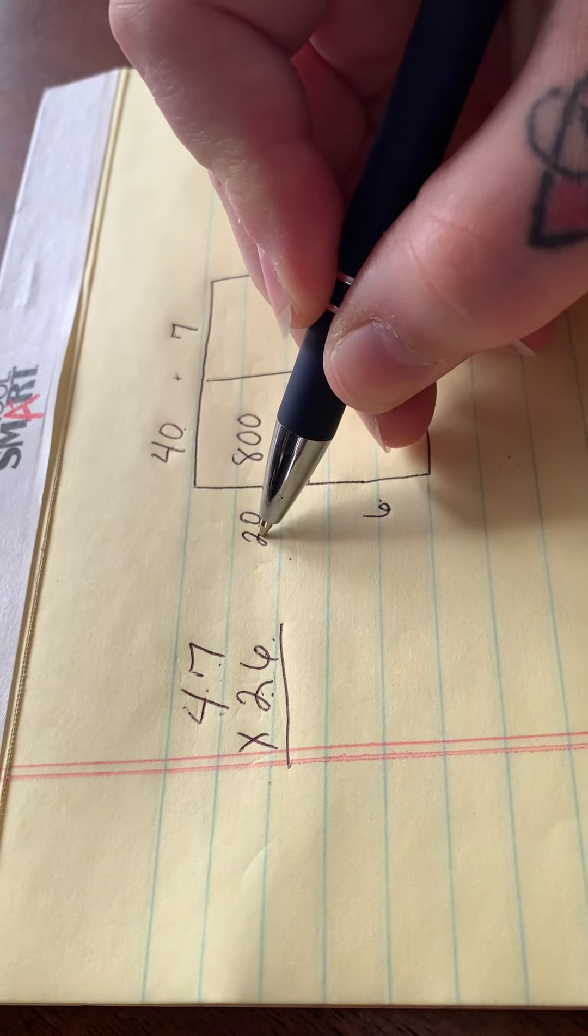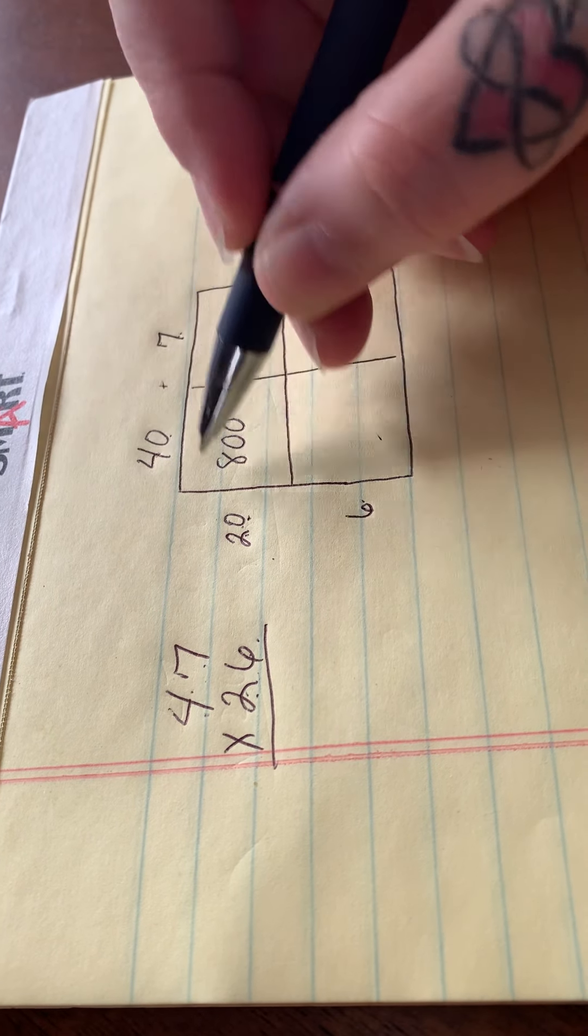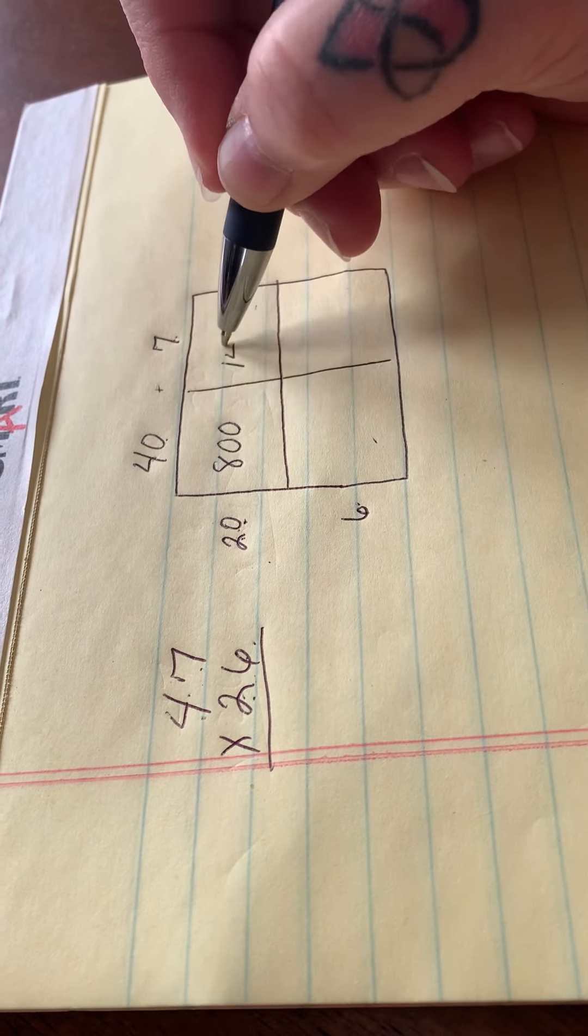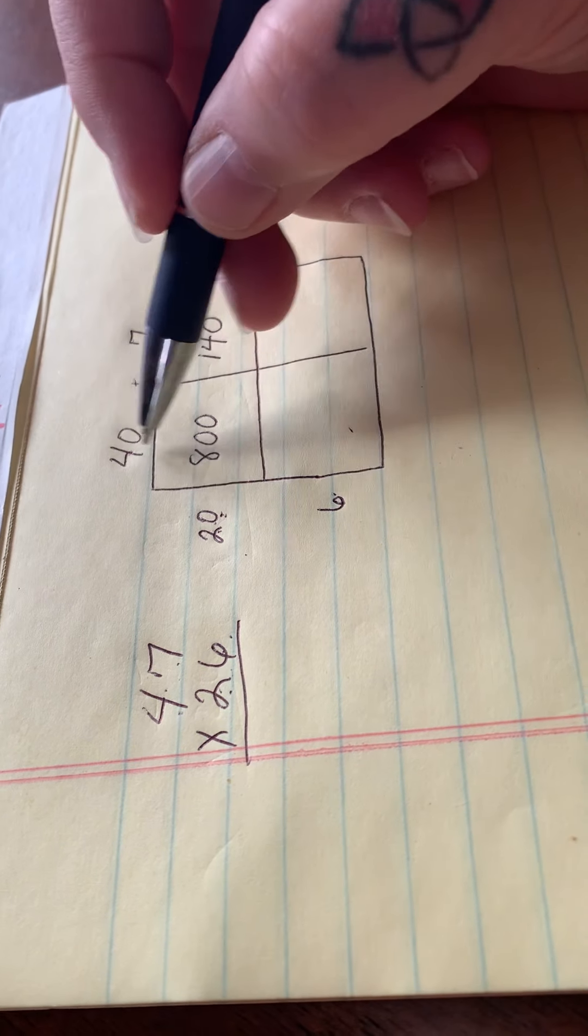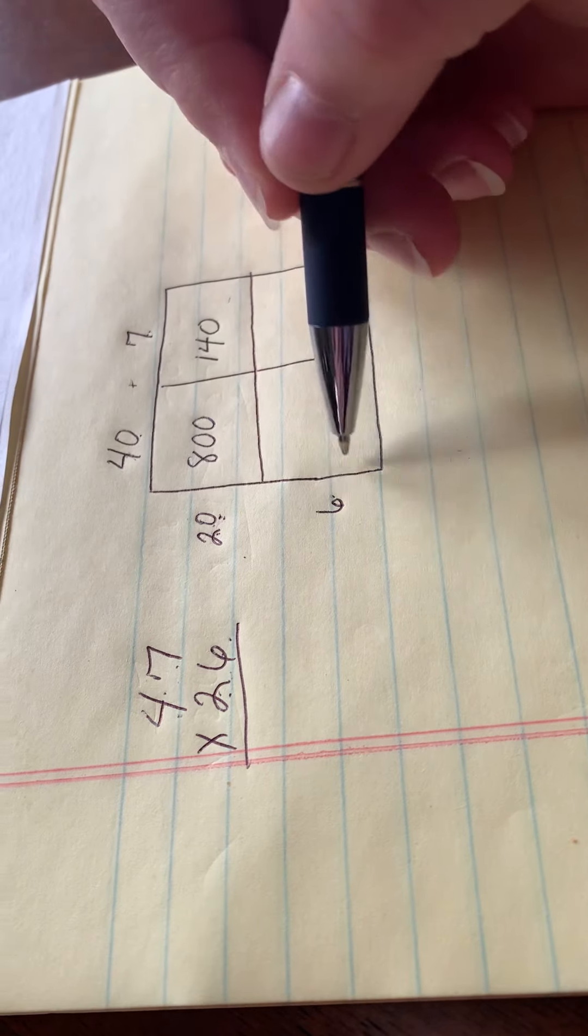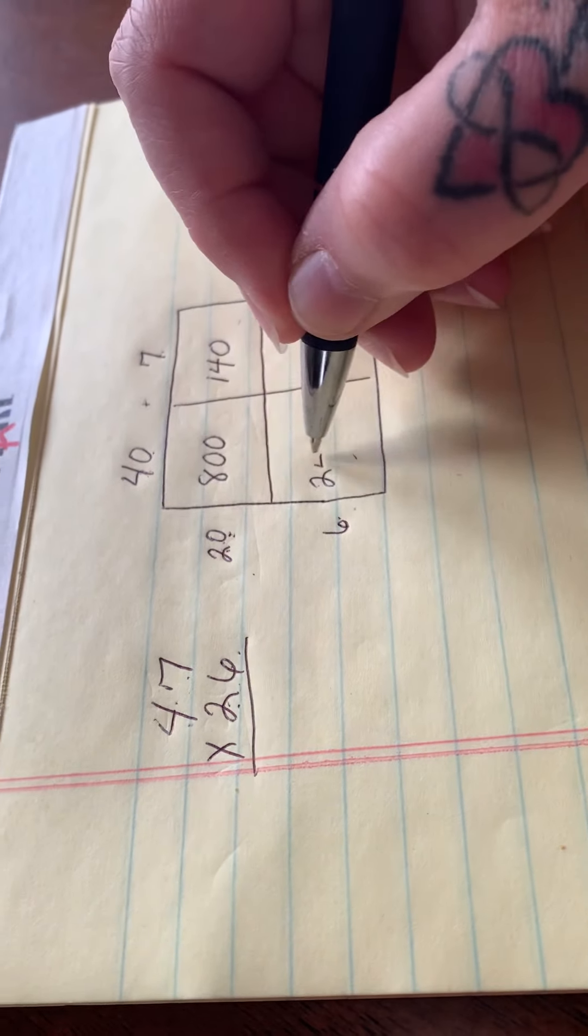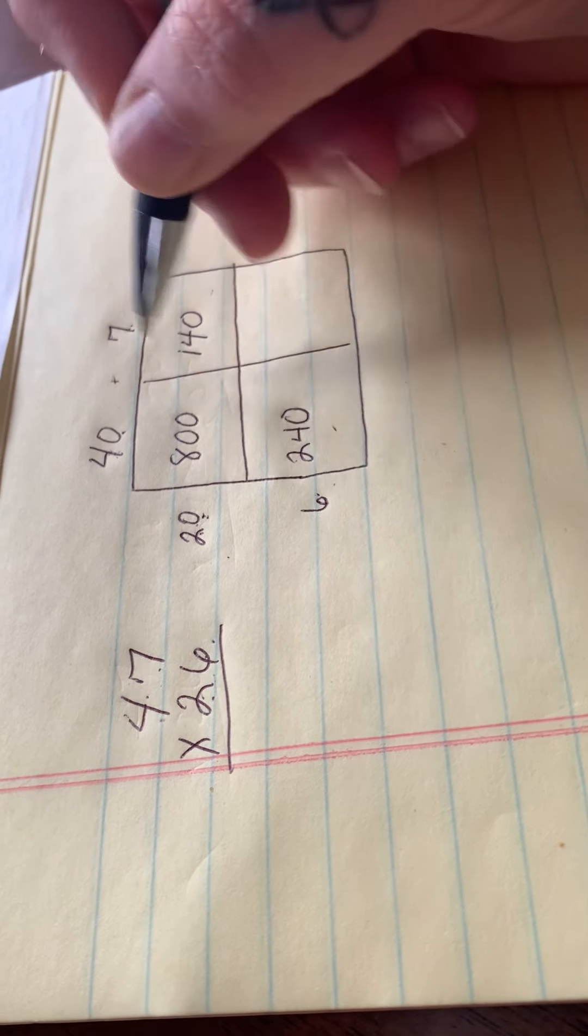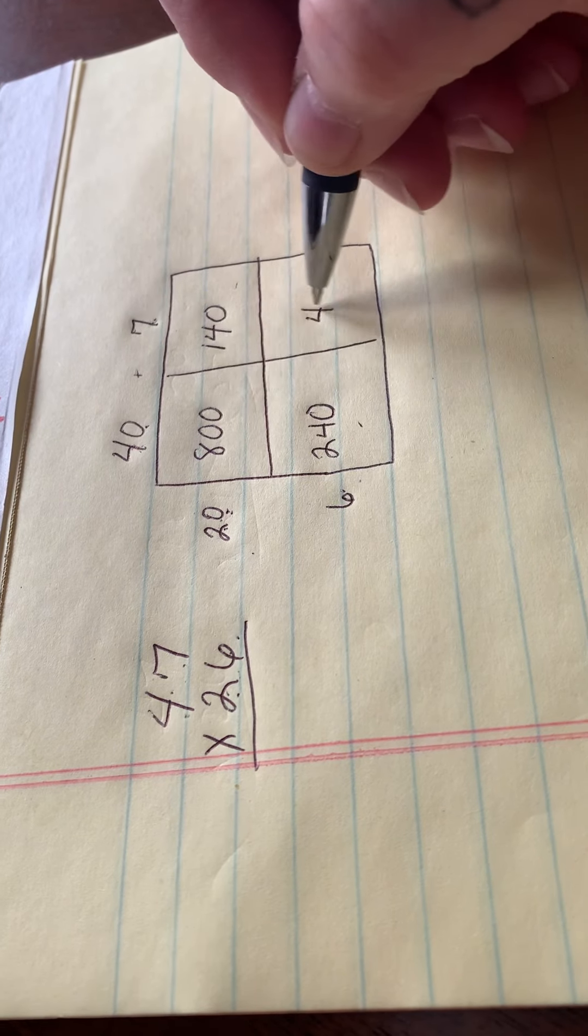Four times two is eight and we have two zeros, so let's add two zeros. We can then go over here and do 20 times seven. So seven times two is 14 and we have one zero. Now let's go down. 40 times six. So four times six is 24 and we have one zero. And then seven times six is 42.